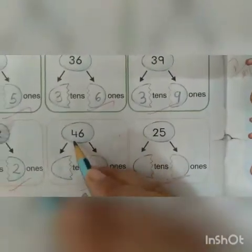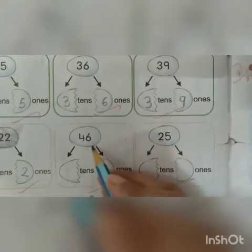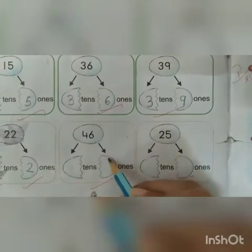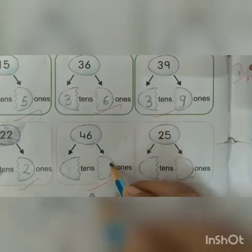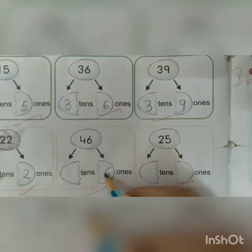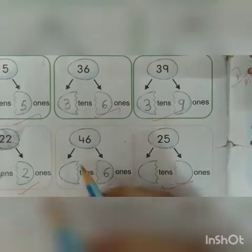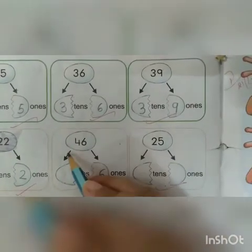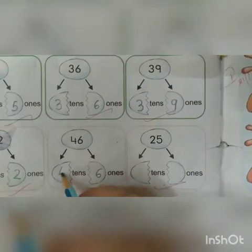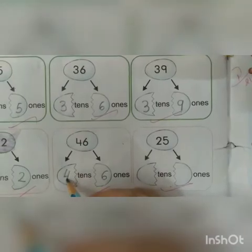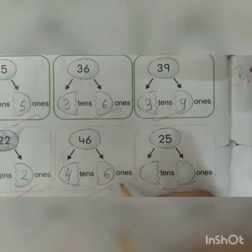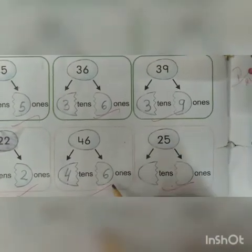Which number is this? 46. How many 1s are here? 6. We will write 6 here. How many 10s are here? 4. We will write 4 here. 4 tens, 6 ones. 46.